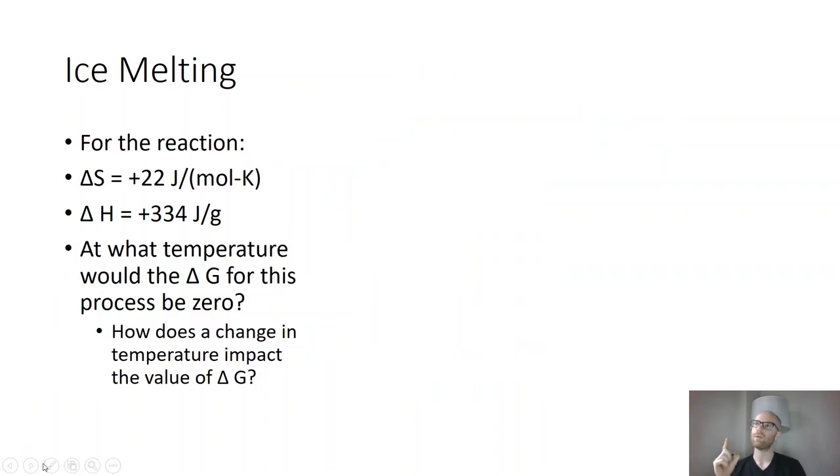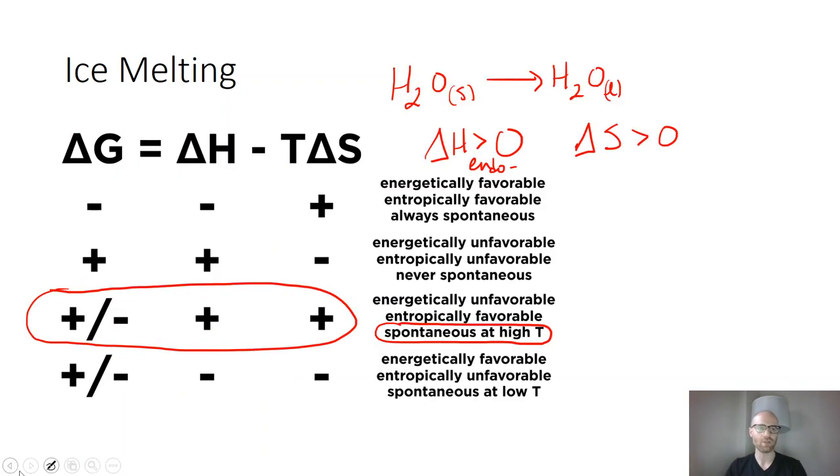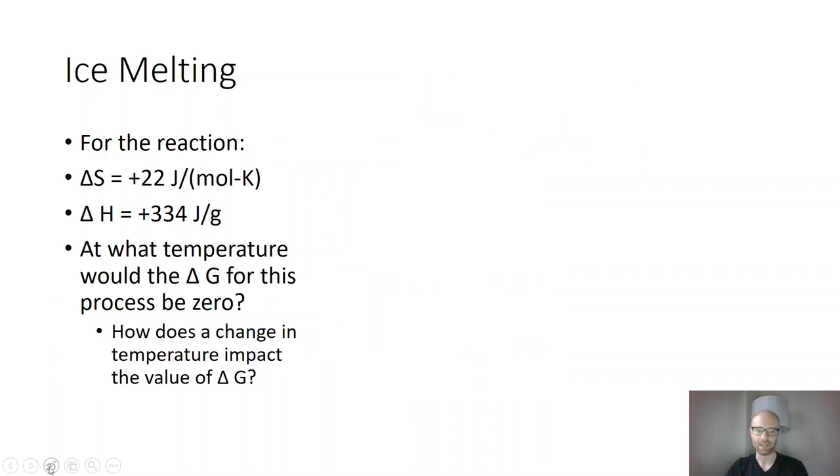Instead of thinking about what the temperature is and what that does to delta G, if the process is going to go from being non-spontaneous to spontaneous, or go from being spontaneous to being non-spontaneous, it means the sign of delta G is going to change. And that's really important because if the sign of delta G is going to change, there has to be a point where the delta G is zero. You can't go from being positive to negative without crossing through zero. And that's where we might see something interesting.